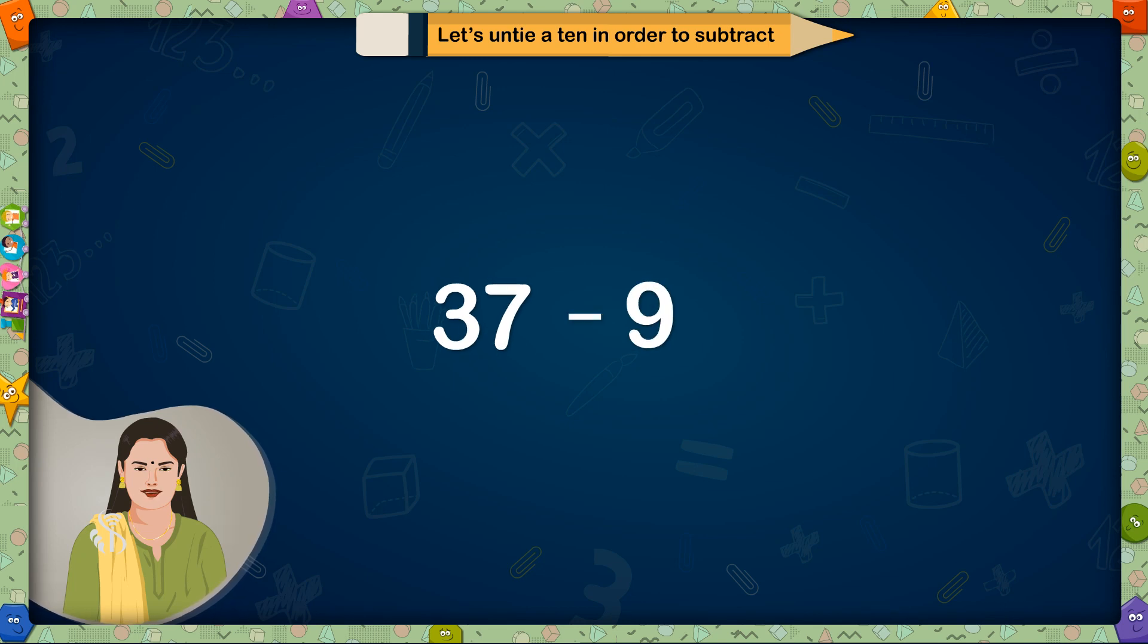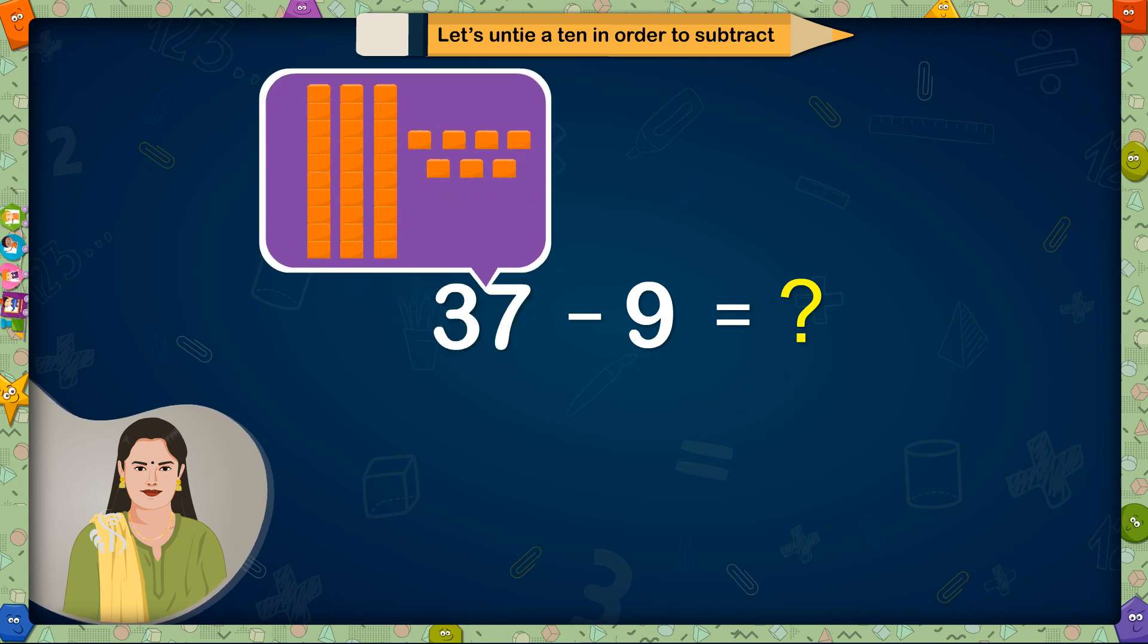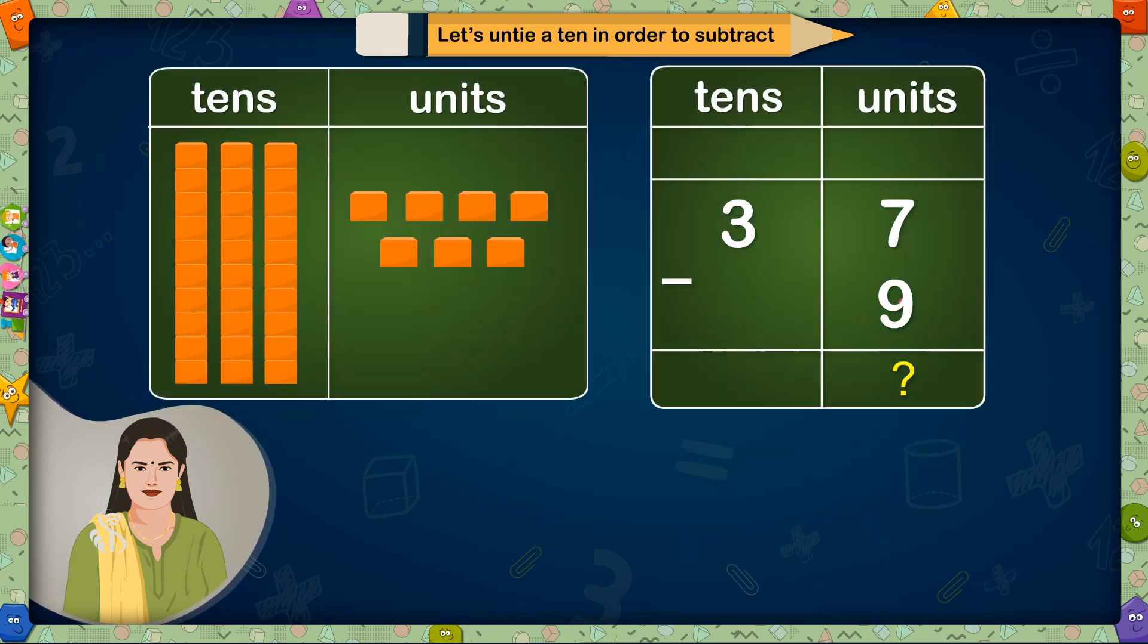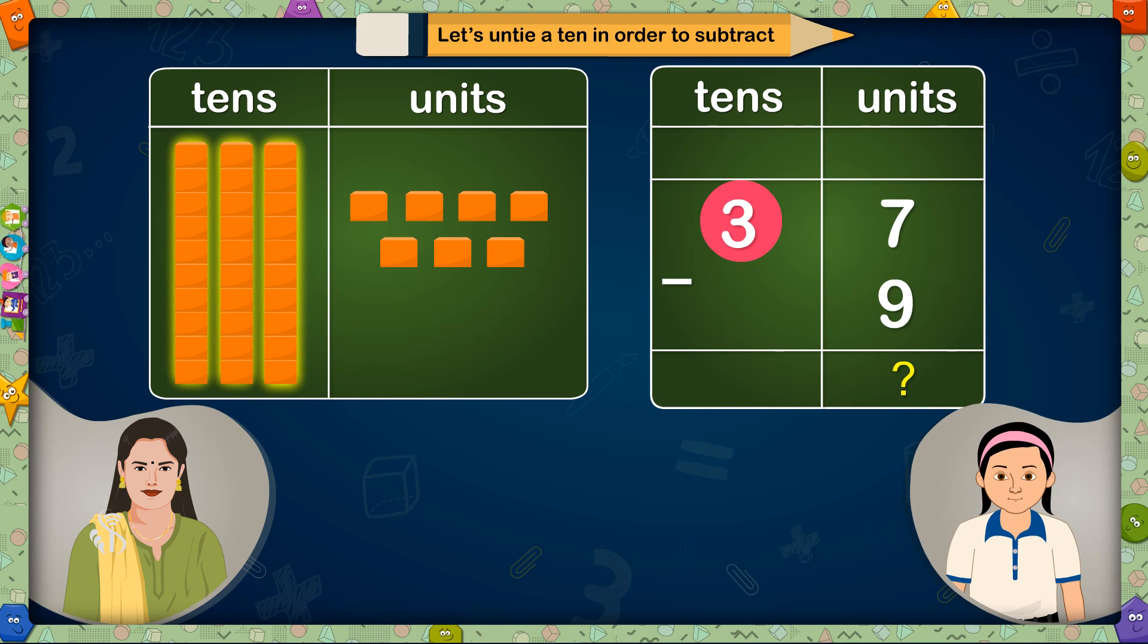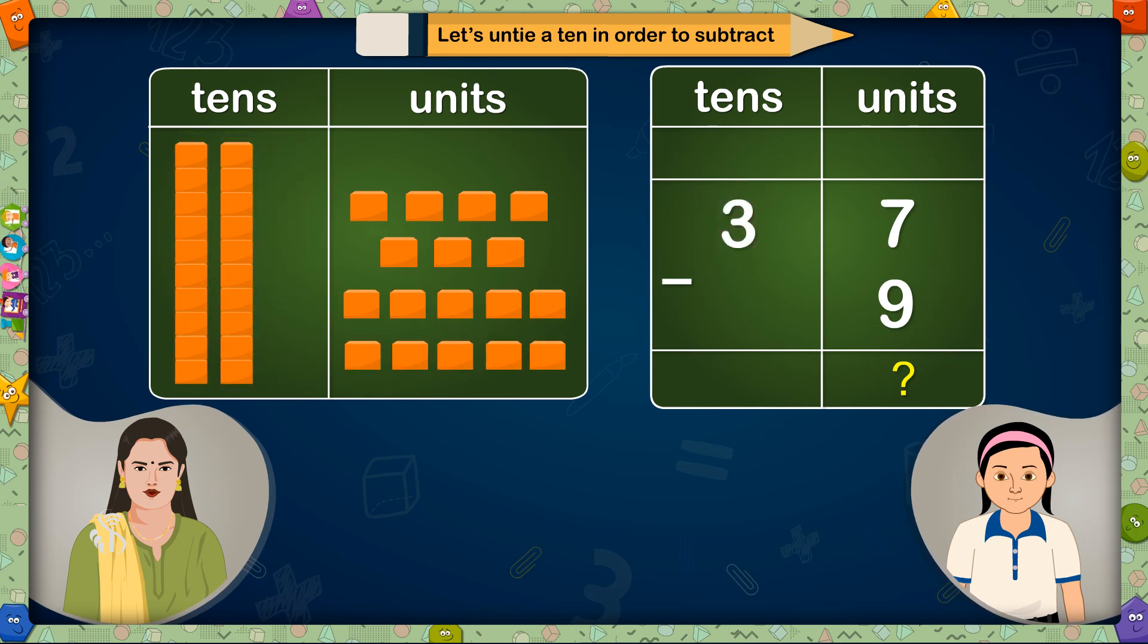Example 2: 37 minus 9 equals. Here we have to subtract 9 from 37. There are 3 tens and 7 units in 37. We cannot reduce 9 units from 7 units. So what do we have to do? We will have to untie 1 ten from these 3 tens. Correct!